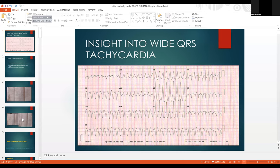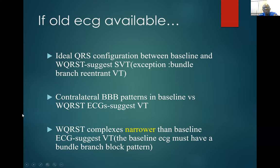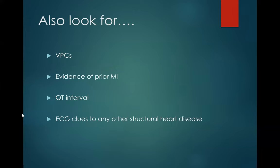When you look at the old ECG and compare it to the presenting ECG showing ventricular tachycardia, a wide QRS complex tachycardia may be suggestive of VT. Also look for PVCs, prior myocardial infarction, and a wide QT interval on the old ECG — all of these are clues that the patient has structural heart disease and is at high risk of ventricular tachycardia.